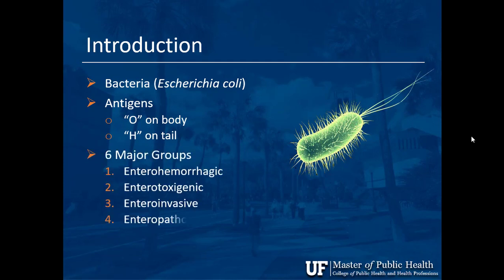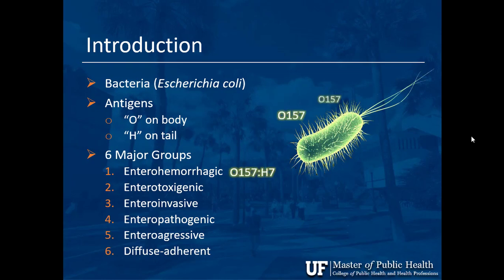There are six major groups of E. coli bacteria. The first one we'll mainly focus on is the enterohemorrhagic — hemorrhage meaning bleeding — followed by enterotoxogenic, invasive, pathogenic, aggressive, and diffuse adherent. We're just going to talk about number one: the enterohemorrhagic, the O157H7 serogroup or strain.